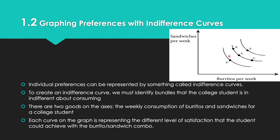Each curve on the graph shows a different level of satisfaction the student has when he achieves a burrito-sandwich combo. He starts off with a little satisfaction eating sandwiches and burritos per week, and as the weeks progress he notices more satisfaction on the indifference curve. On the last indifference curve, labeled E, satisfaction is highest and continues going higher.